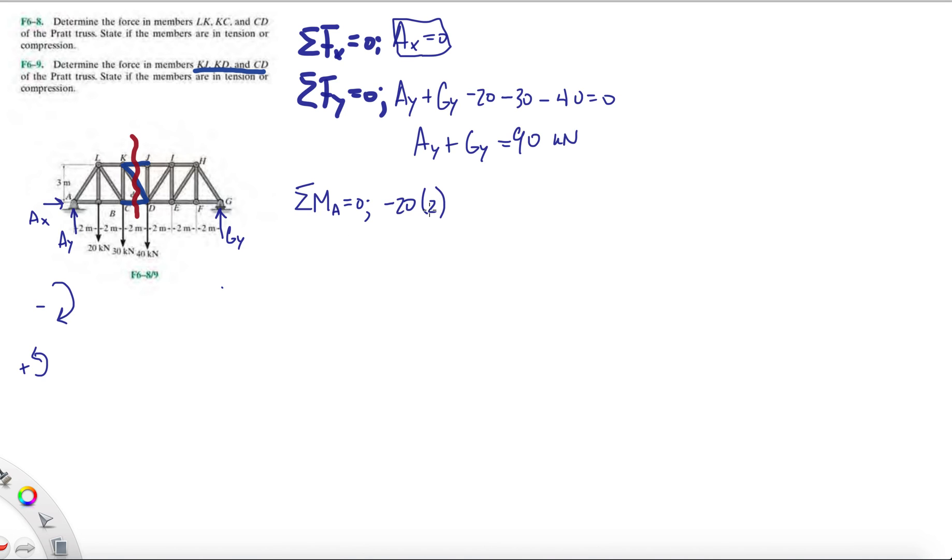So you're going to have minus 20 times the distance of 2 meters. Then you have minus 30 times 4, and then minus 40 times 6. And last but not least, you have the Gy moment, so plus Gy times 12 equals zero. After you calculate all this, you should get a Gy of 33.3. This problem does not give you nice round numbers, that's for sure.